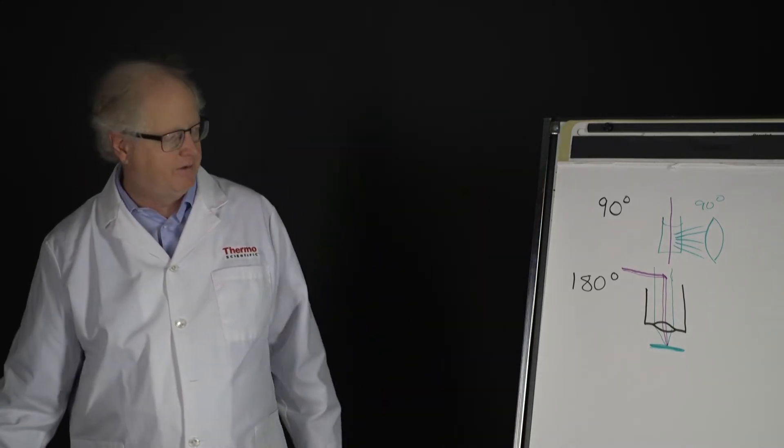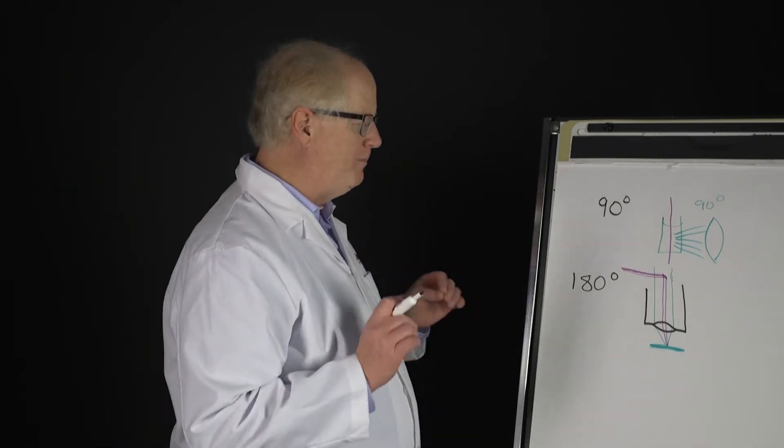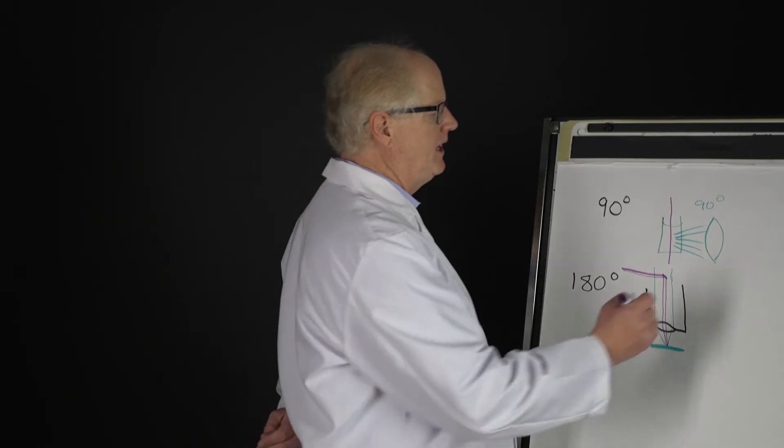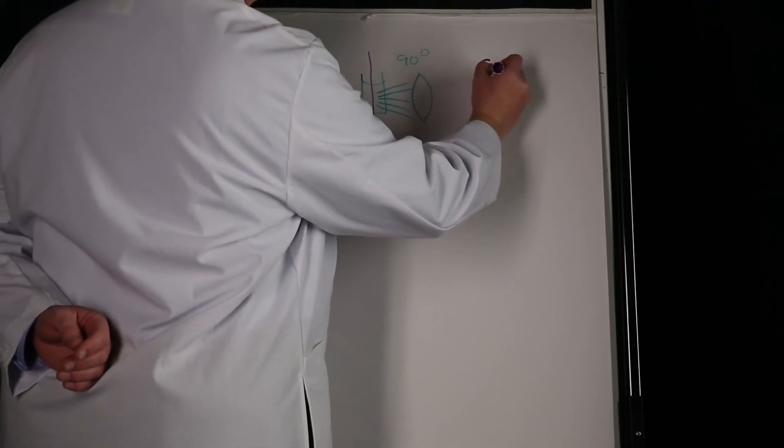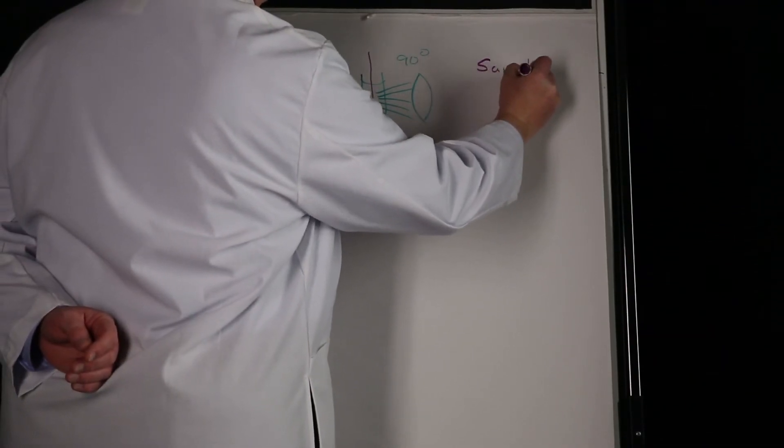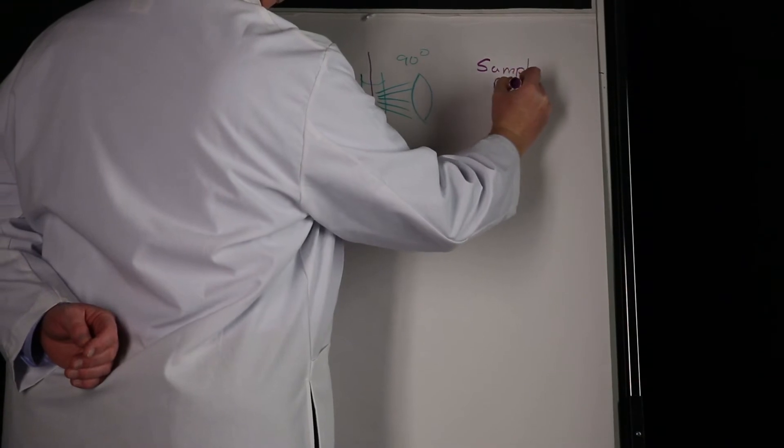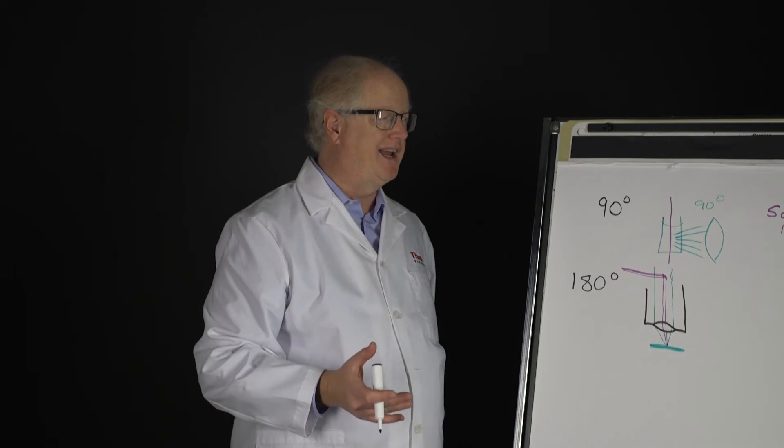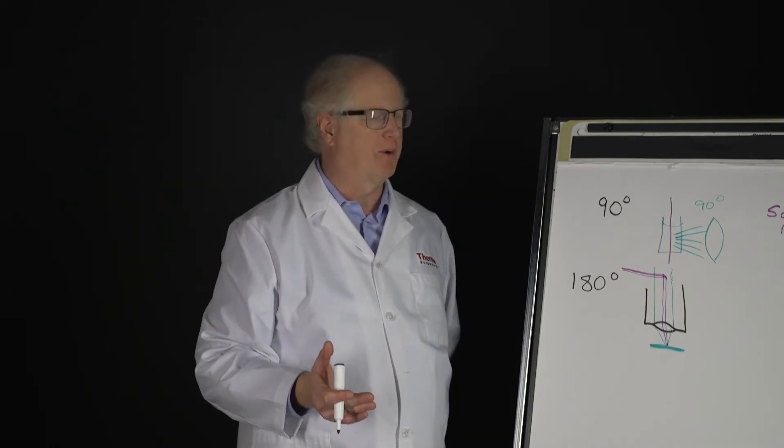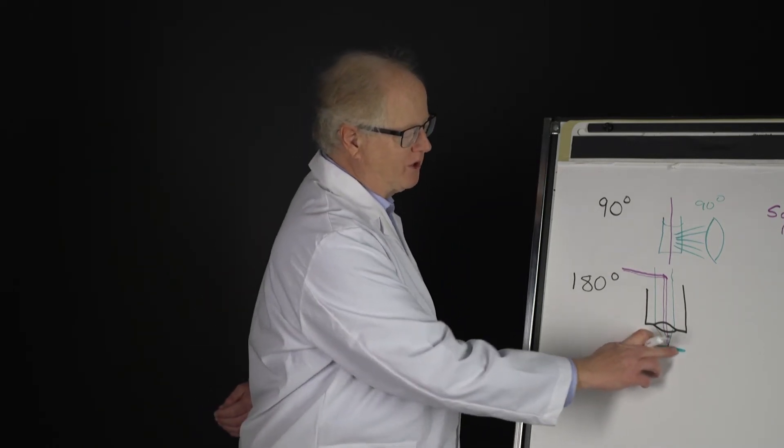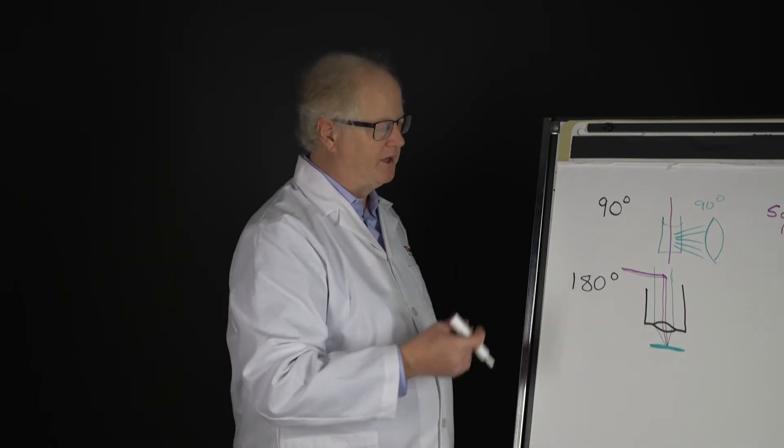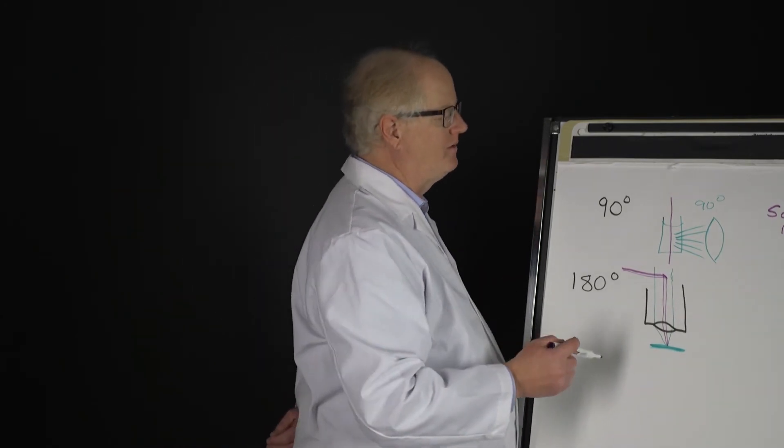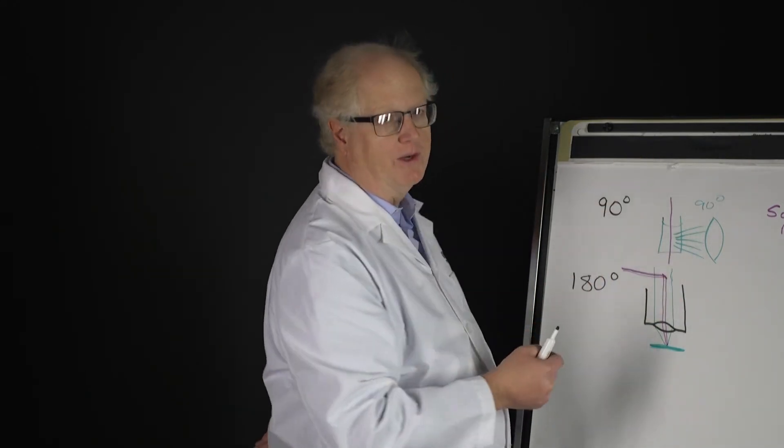One of the big advantages of Raman over some of the other techniques has to do with sample preparation. As the Raman spectroscopist would tell you, there isn't any in many cases. There doesn't need to be very much sample prep at all. You just put your surface right in here, you put it into the system, and you start collecting Raman spectra in a backscatter mode off of it. In this case, you've got a liquid contained in an NMR tube or some other vessel like that.